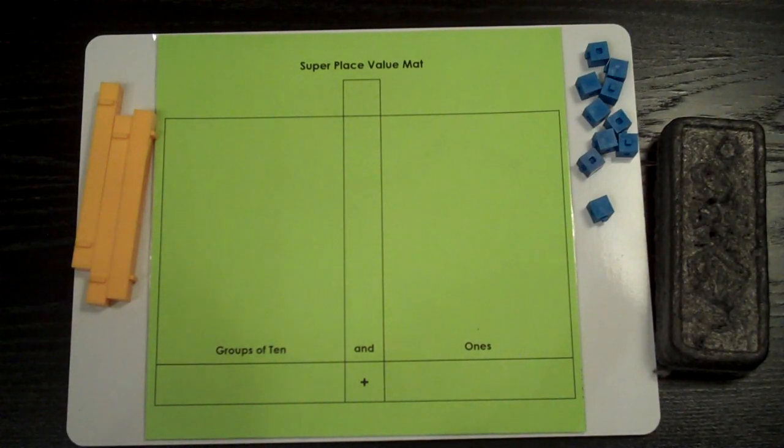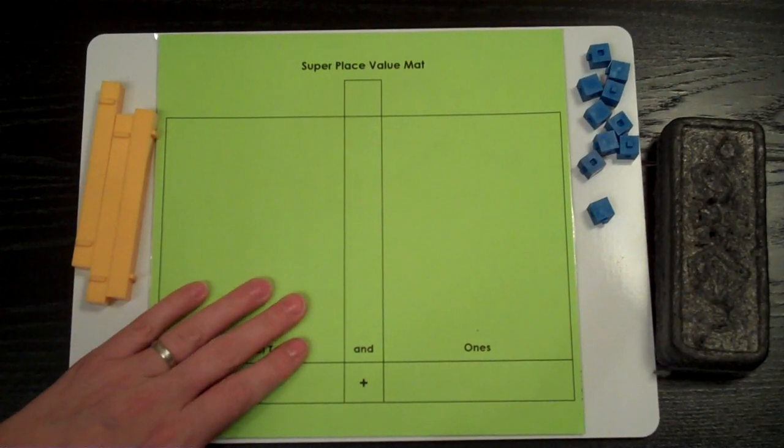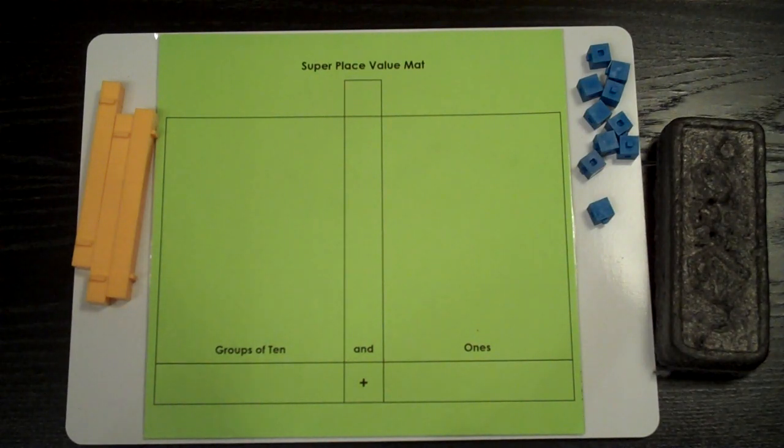Let's review place value. We are going to use a place value mat to learn something about numbers to 100. This place value mat has two different sections, a ones place and a tens place. It also has a place to show what we make on the mat with numerals.